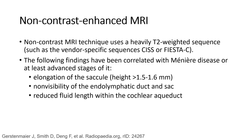On non-contrast MRI, the following findings have been correlated with Meniere's disease: at least at one step, elongation of the saccule, height more than 1.5 to 1.6 mm, non-visibility of the endolymphatic duct and sac, and reduced fluid length within the cochlear aqueduct.